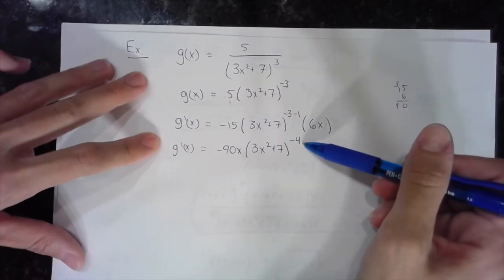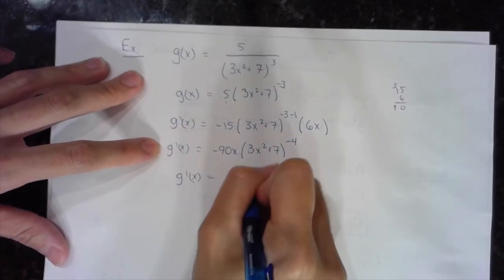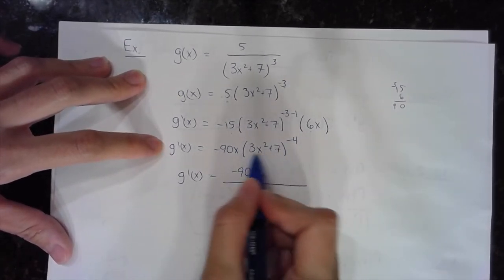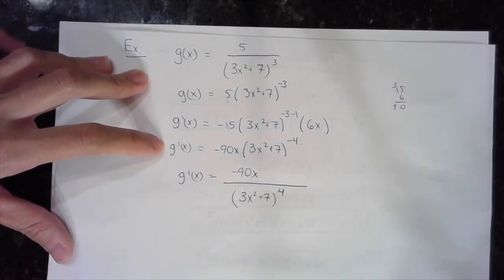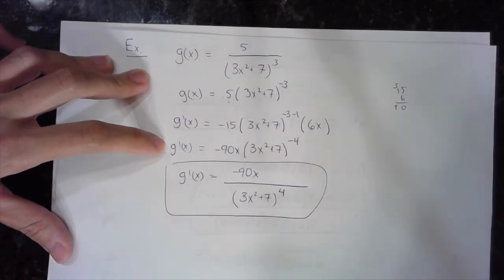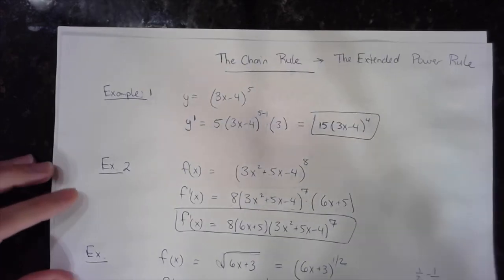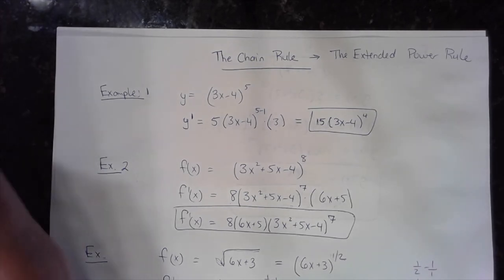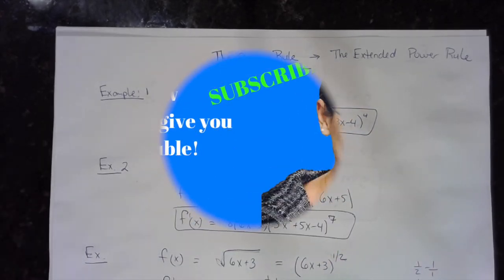If I rewrite this without the negative exponent, negative 90x stays on top because the negative exponent only applies to the base (3x squared plus 7). When I bring it down, that exponent becomes positive 4. So this is my first derivative. This is the chain rule, also known as the extended power rule. I'm going to do a couple more videos applying the chain rule to the product rule, quotient rule, and trigonometric functions — so look for those videos.